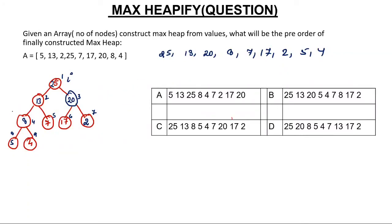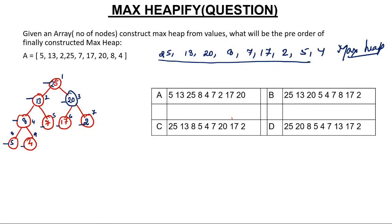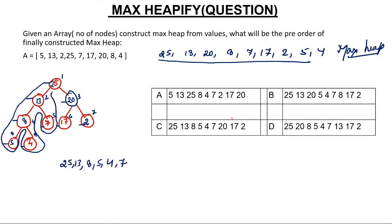Now we have to find the pre-order of this max heap. Pre-order means visiting the left line of every node first. Starting from the root: first touch 25, then 13, then 8, then 5, then 4, then come back to 7, then move to 20, then 17, then 2. So the pre-order traversal gives us: 25, 13, 8, 5, 4, 7, 20, 17, 2.